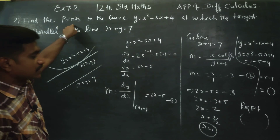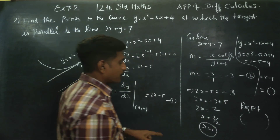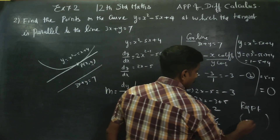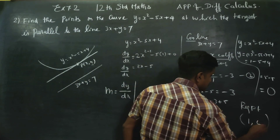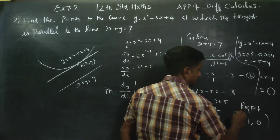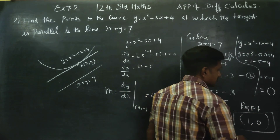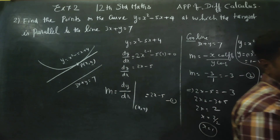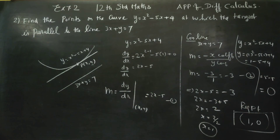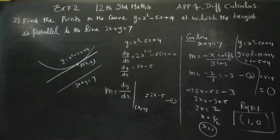What is the point? Our required point is (1, 0) — first the x coordinate, then the y coordinate. This is our required point, at which the tangent is parallel to the given line. This is the point where the tangent grazes the curve.